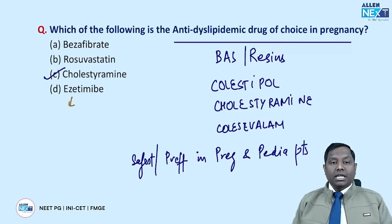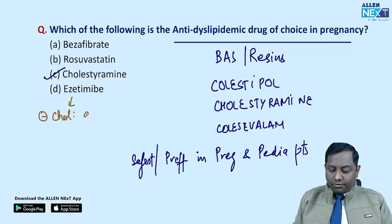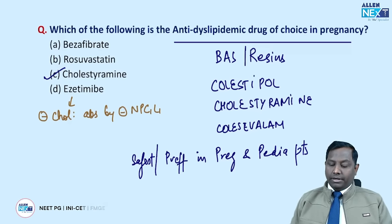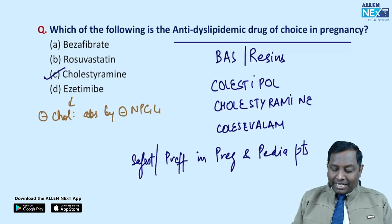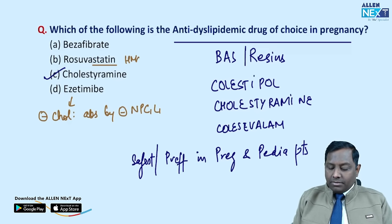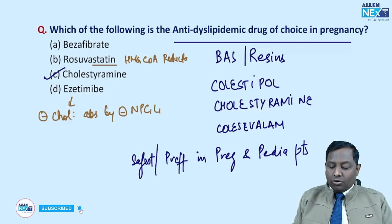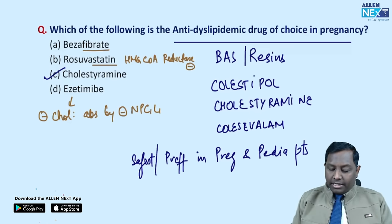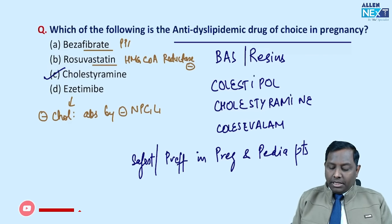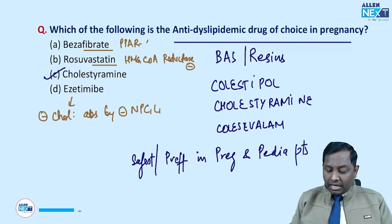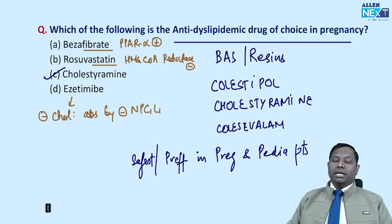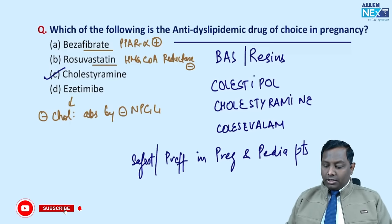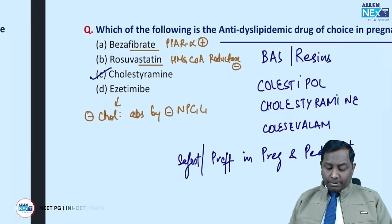Ezetimibe inhibits cholesterol absorption from the intestine by inhibiting the NPC1L1 transporter. Rosuvastatin is a statin and HMG-CoA reductase inhibitor. Fibrates such as fenofibrate are PPAR-alpha agonists — they act via nuclear receptors and increase lipoprotein lipase, causing breakdown of triglycerides. Cholestyramine remains the preferred anti-dyslipidemic drug in pregnancy.